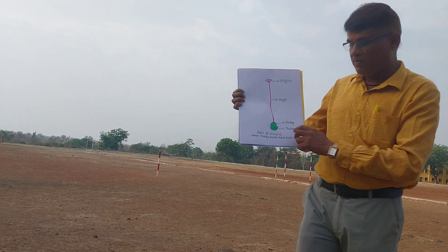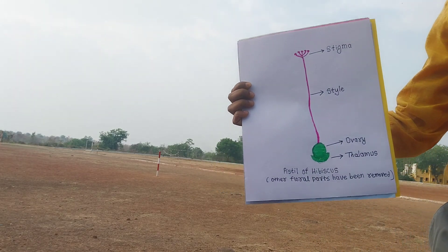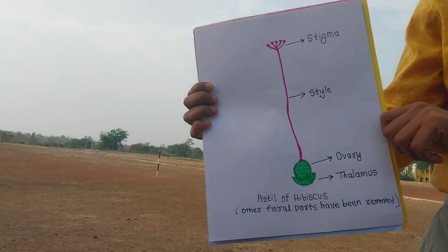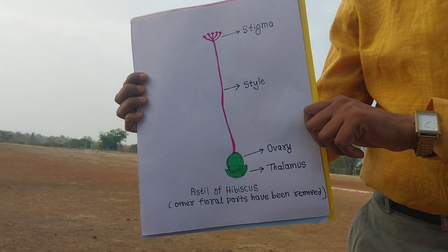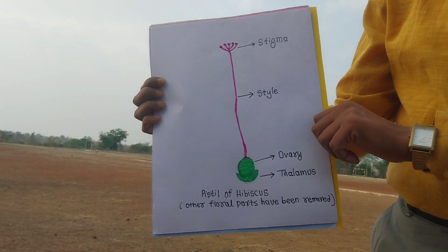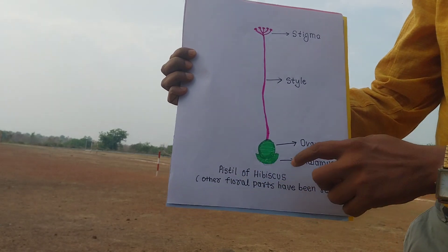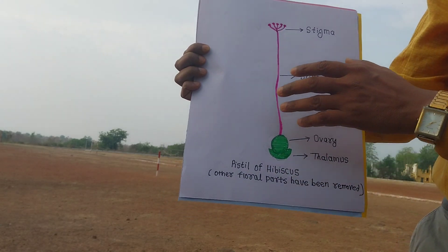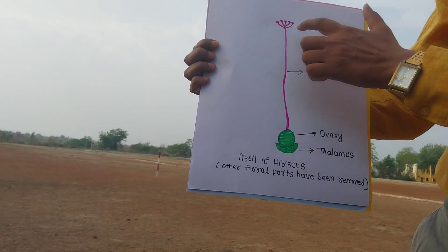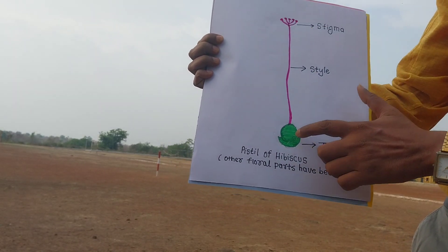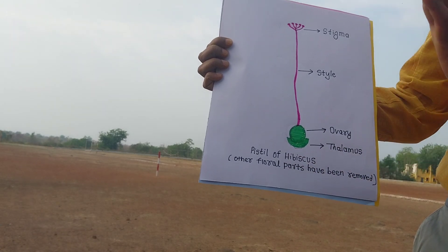The Pistil of Hibiscus we have to see. See here the Pistil of Hibiscus — all of you getting this? In this Pistil, all other parts are removed; only just this Gynoecium or Pistil, the female part, is shown here.